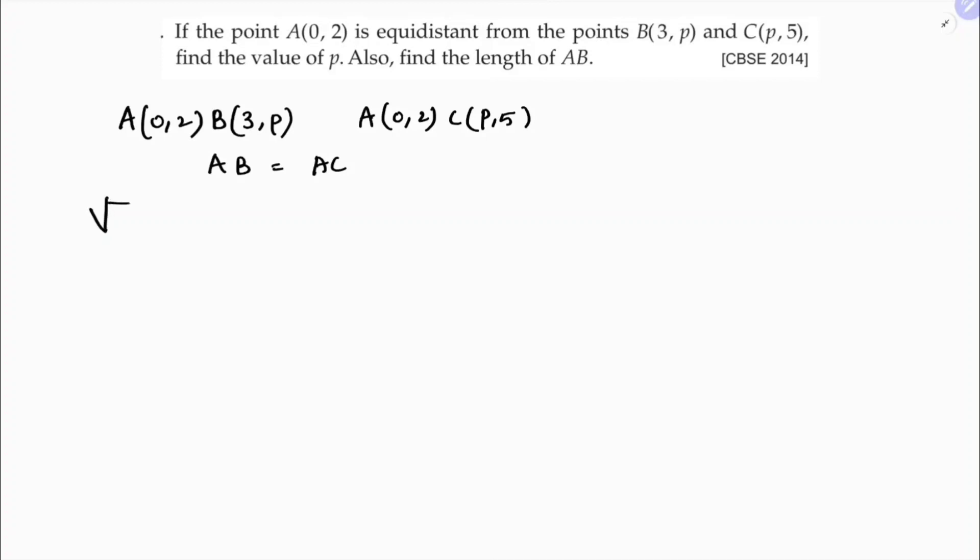So if I write the formula, distance formula: under root x2 minus x1 whole square plus y2 minus y1 whole square. So AC: x2 minus x1 whole square plus y2 minus y1 whole square.